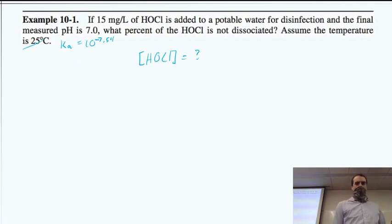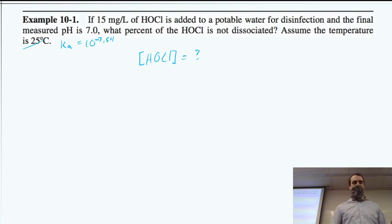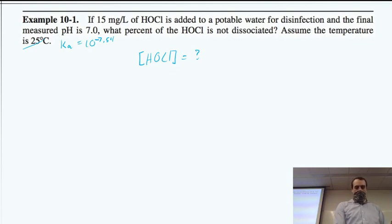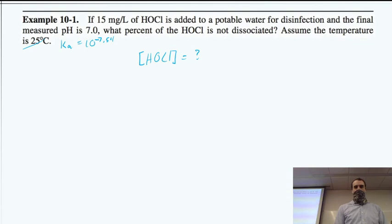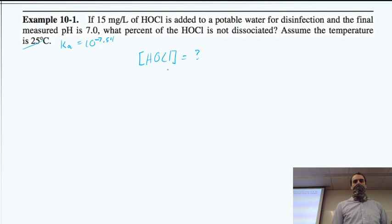We saw this example before: if we add 15 mg/L of HOCl to some water for disinfection, with a final pH of 7, what percent is not dissociated? That's really asking how much is in the form of HOCl. Make sure that you can do that calculation — if you can't, let me know and I'm happy to help. As we start looking at the disinfection technologies, it should become clear why that's so important.